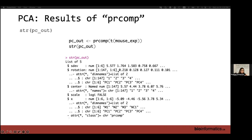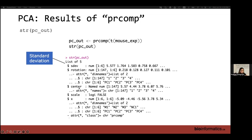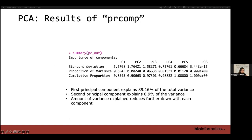The STR function gives the structure of the prcomp output. Basically, the output is a list of five elements. The first is sdev, which represents the standard deviation of each principal component. Then we have rotation, which is the same as loading. We have center, which is the mean of your variables. Scale is the variance of your variables. And X is the principal components or the score matrix.